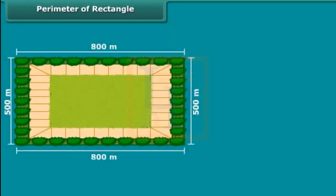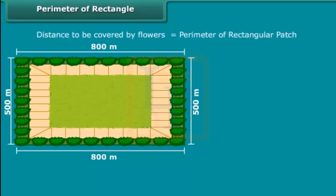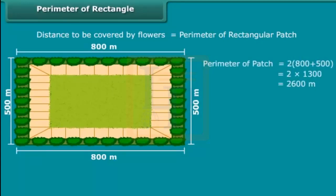We wish to plant flowers on all sides of a rectangular patch of land whose length is 800 meters and breadth is 500 meters. Calculate the total distance to be covered by flowers. The distance to be covered by flowers will be equal to the perimeter of the rectangular patch, which is 2600 meters.